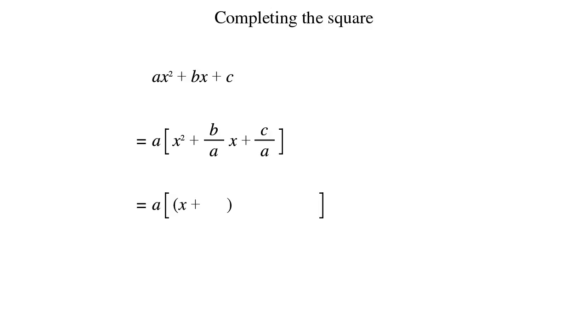We need to divide the term in front of our x term by 2, but instead of b, we now have b over a. So when we divide this by 2, we obtain b over 2a. We square the whole bracket.